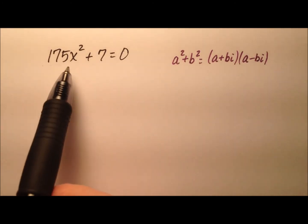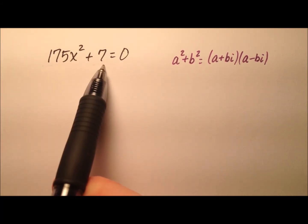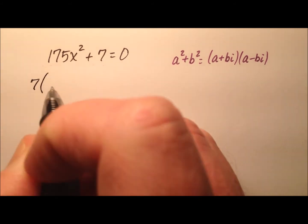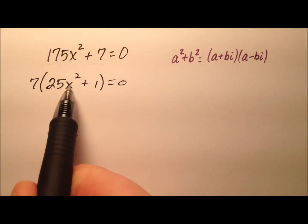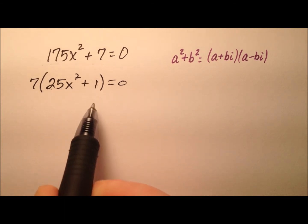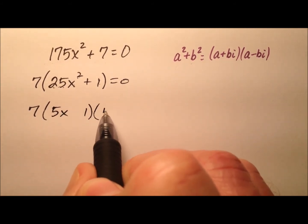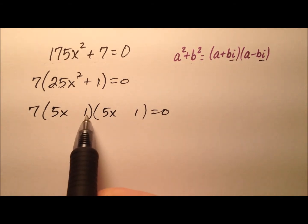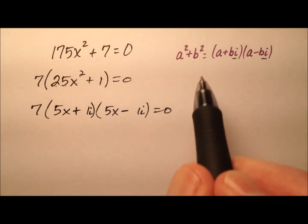In this second equation, we're going to solve 175x squared plus seven equals zero by factoring. I notice that between these two terms I have a greatest common factor that can come out before I use the sum of squares. I can pull a seven out, giving me 7 times (25x squared plus one) equals zero. My 25x squared plus one works nicely with the sum of squares because 25x squared and one are both perfect squares. So I'll keep my seven and factor to get 7 times (5x plus i) times (5x minus i) equals zero, and the factorization is now complete.